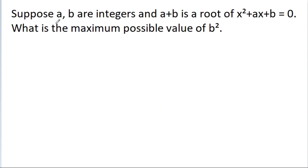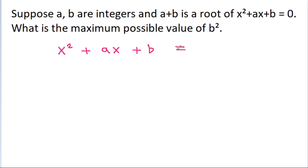In this video, we have given that a and b are integers, and a plus b is a root of x squared plus ax plus b equals 0. Then we have to find the maximum possible value of b squared. The given equation is x squared plus ax plus b equals 0, and since a plus b is a root, it must satisfy the equation.